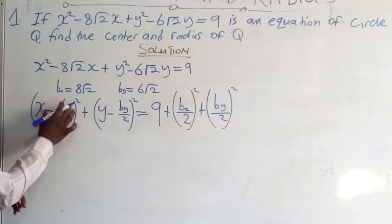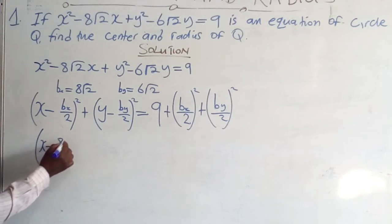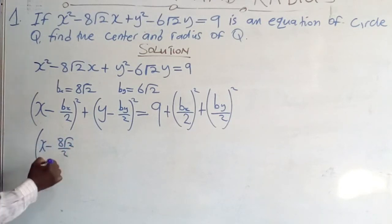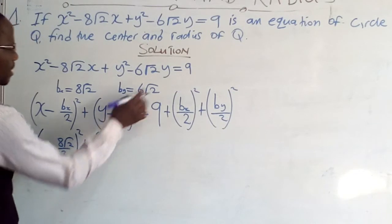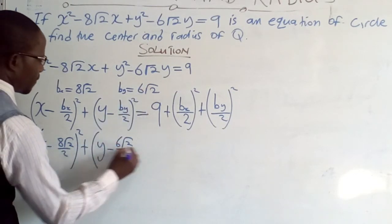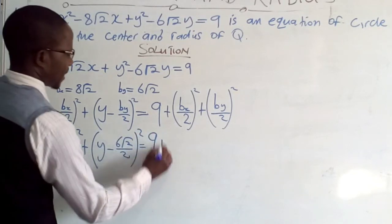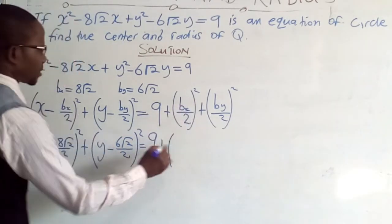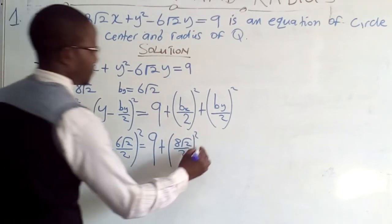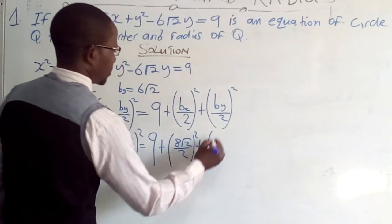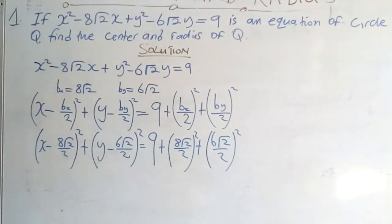So b in terms of x is 8√2, giving us (x − 8√2/2)² plus (y − 6√2/2)² equals 9 plus (8√2/2)² plus (6√2/2)².